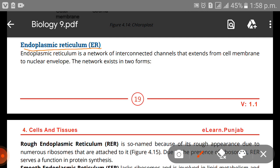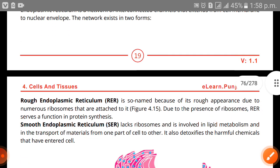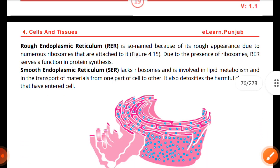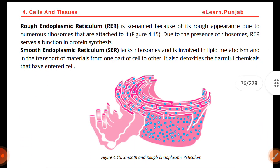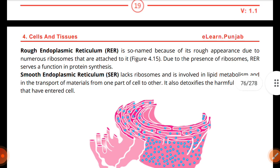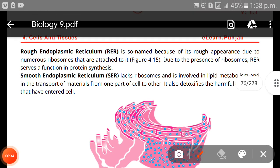Endoplasmic reticulum is a network of interconnected channels that extends from the cell membrane to the nuclear envelope. The network exists in two forms — there are two types of endoplasmic reticulum. Rough endoplasmic reticulum is so named because of its rough appearance.